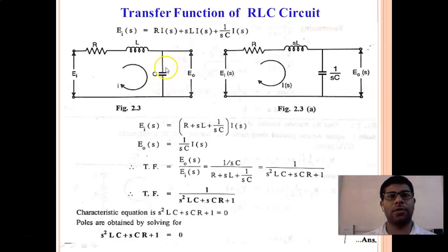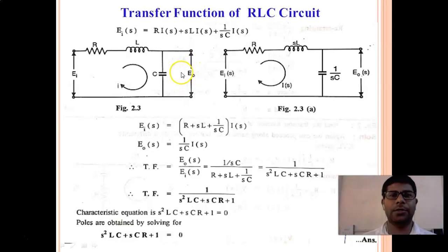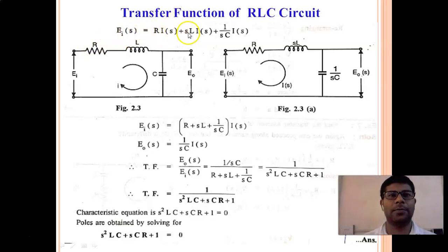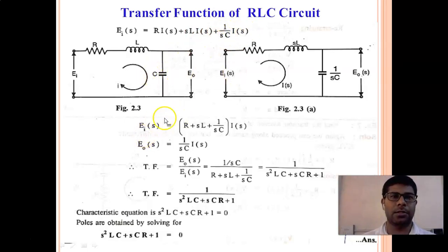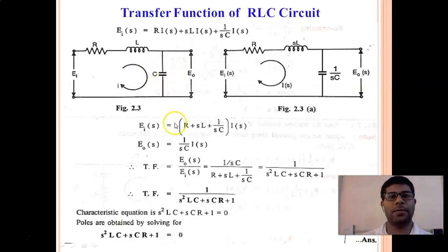The output equation is E₀(T) = 1/C · integral from 0 to T of I(T)·dT. Taking the Laplace transform of the input equation: A(S) = R·I(S) + SL·I(S) + 1/(SC)·I(S). The Laplace transform of the output equation gives: E₀(S) = 1/(SC)·I(S).